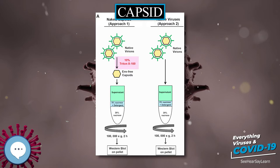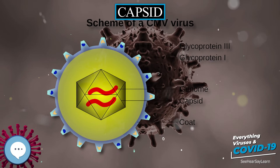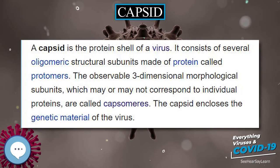In other viruses, especially more complex viruses with double-stranded DNA genomes, the capsid proteins assemble into empty precursor pro-capsids that include a specialized portal structure at one vertex. Through this portal, viral DNA is translocated into the capsid.